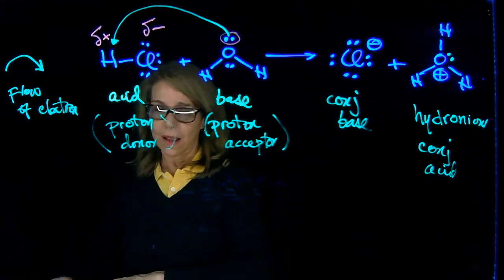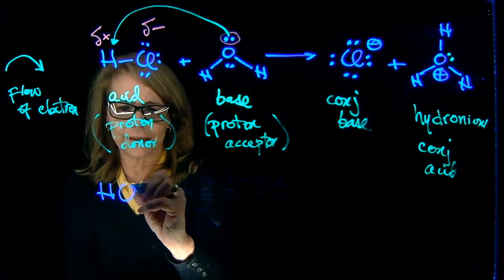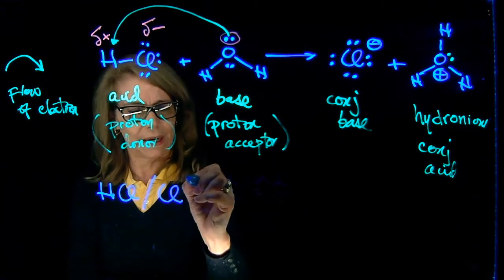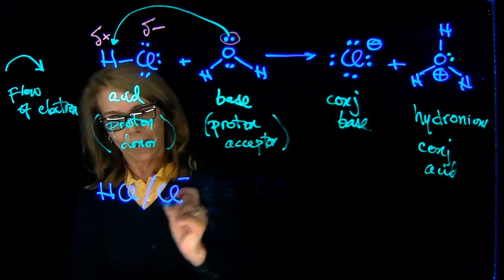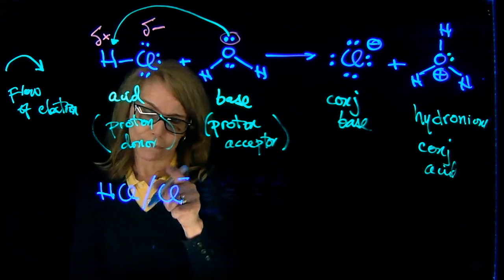Now we're going to write the pair of conjugates. Say hydrochloric acid is the acid, its conjugate base is chloride. So that is a pair of conjugates. Notice the difference is one proton.